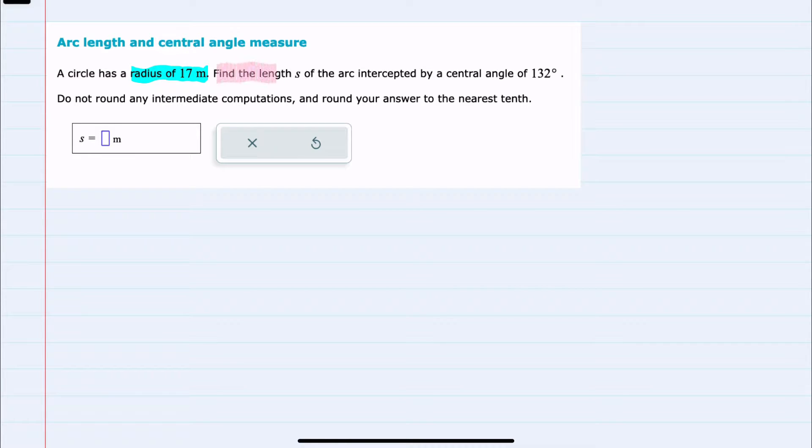We're asked to find the length S, which is the arc intercepted with a central angle of 132 degrees. We're asked not to round any of the intermediate computations and to round our final answer to the nearest tenth.